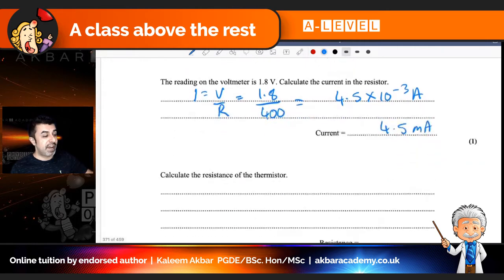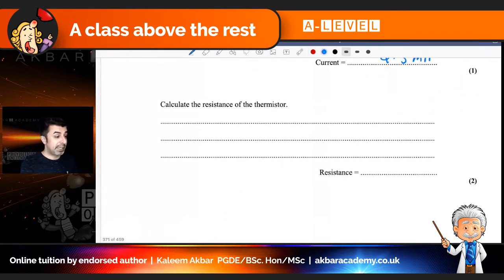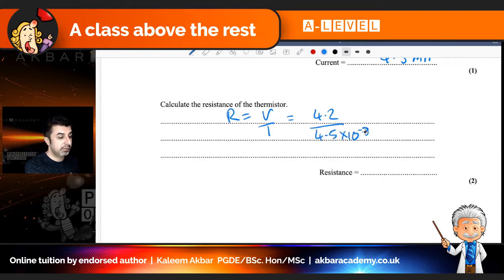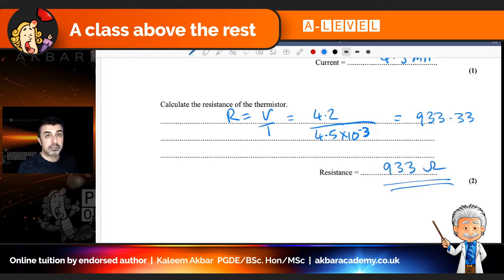So that lets me find the resistance of the thermistor quite easily. So again, using Ohm's law, R equals V over I, which is 4.2 divided by 4.5 times 10 to the minus three. Let's stick that in the calculator. So 4.2 divided by, and we get 933.33 ohms. I'm going to just round that down to 933 ohms.